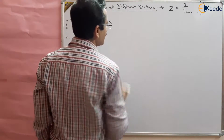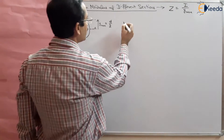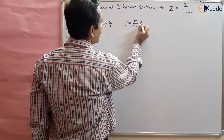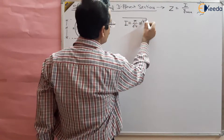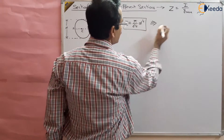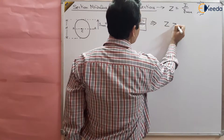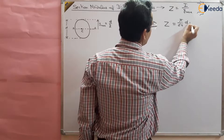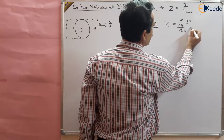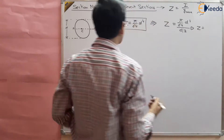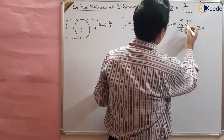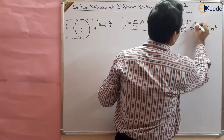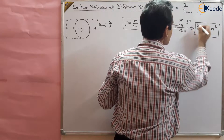The moment of inertia of a circular section is equal to π/64 × d⁴. So the section modulus Z for a circular section will be equal to (π/64 × d⁴) divided by (d/2), which gives Z = π/32 × d³. This is the section modulus of a solid circular section.